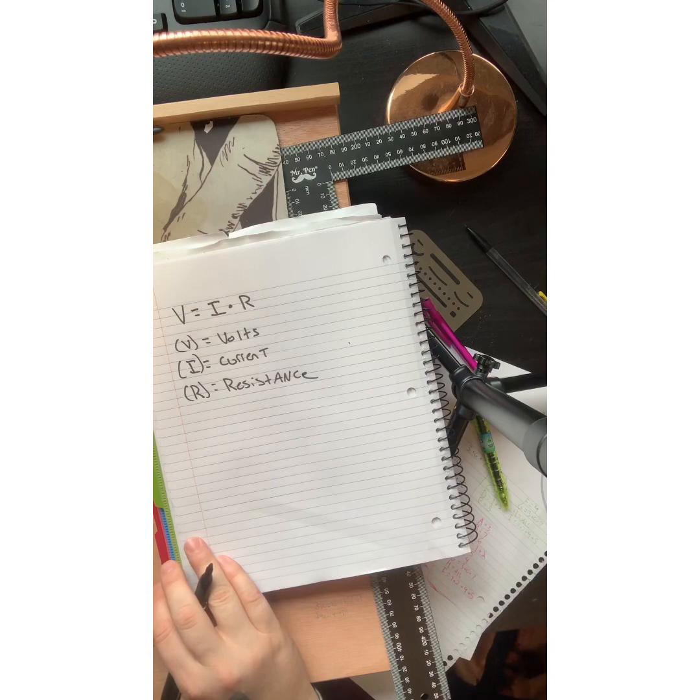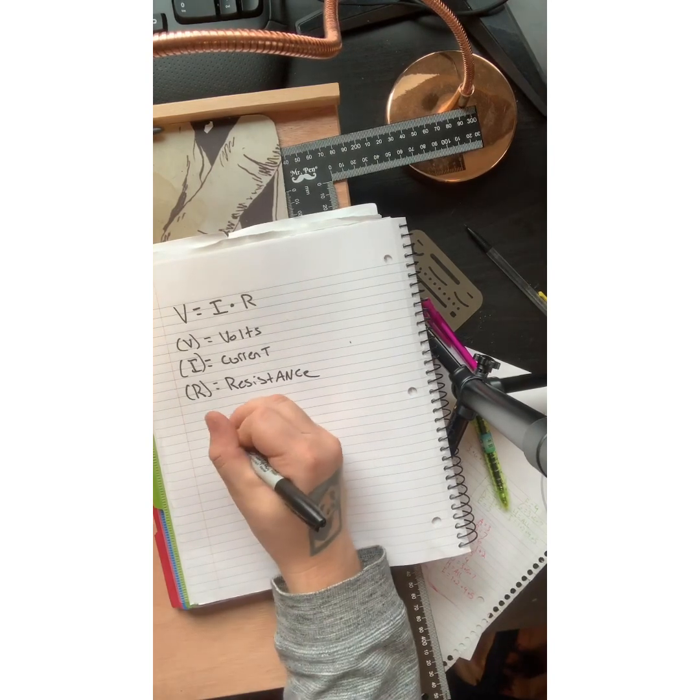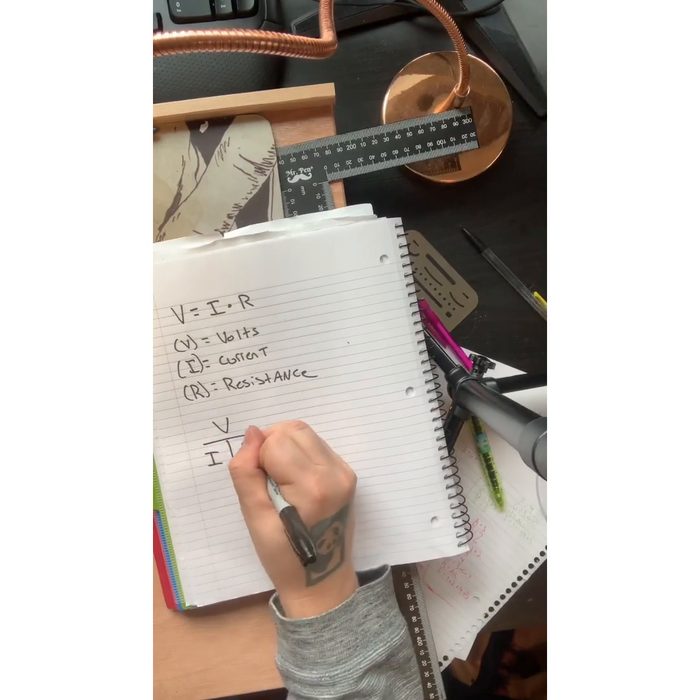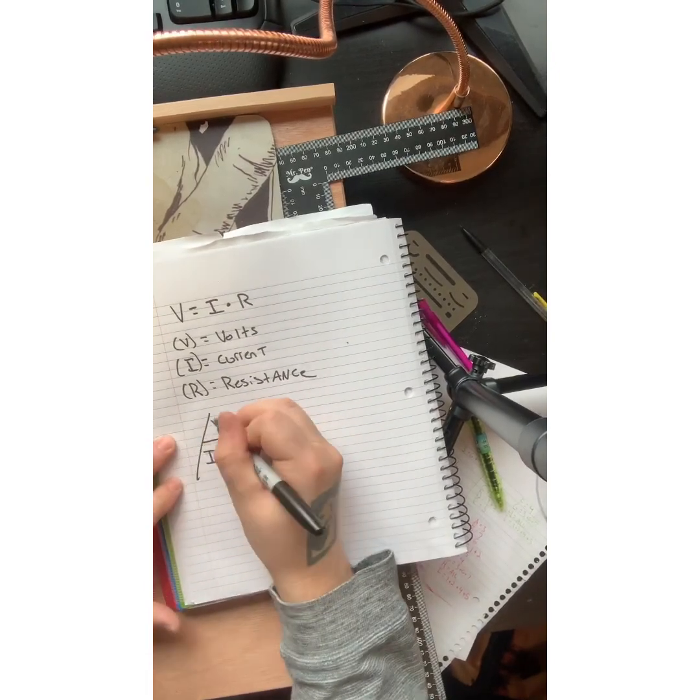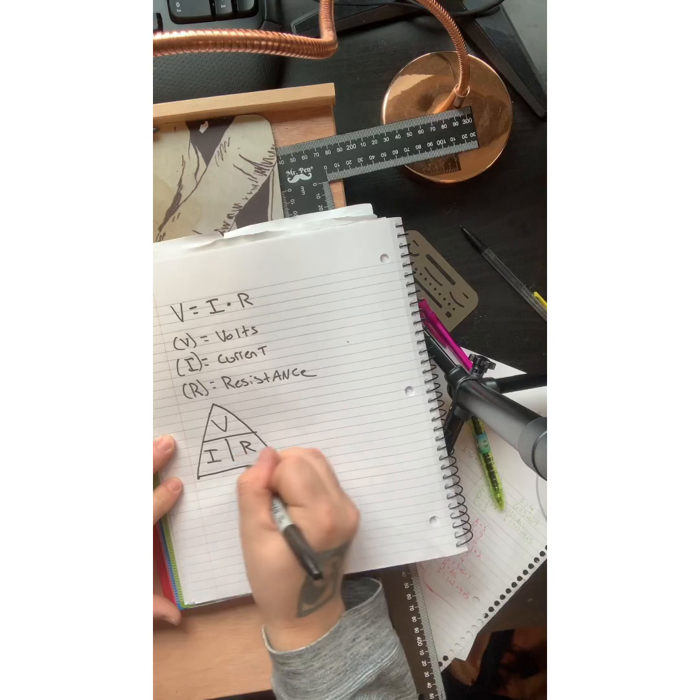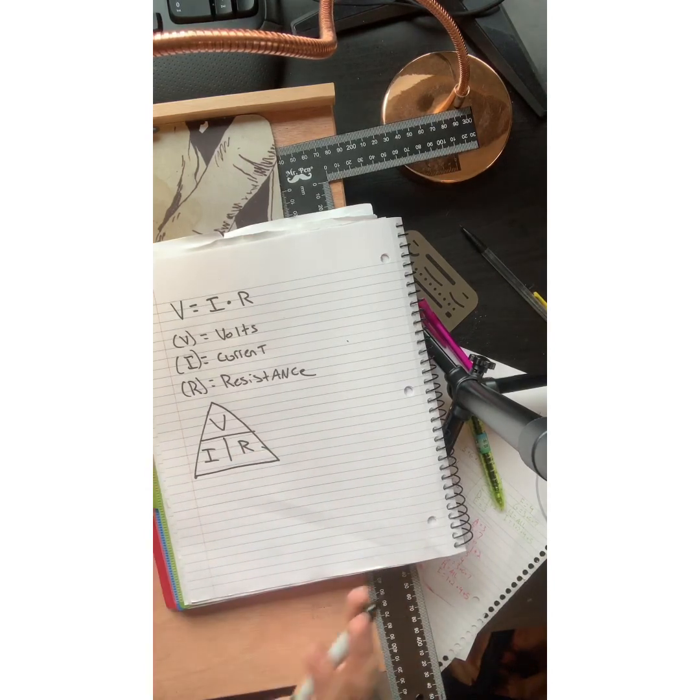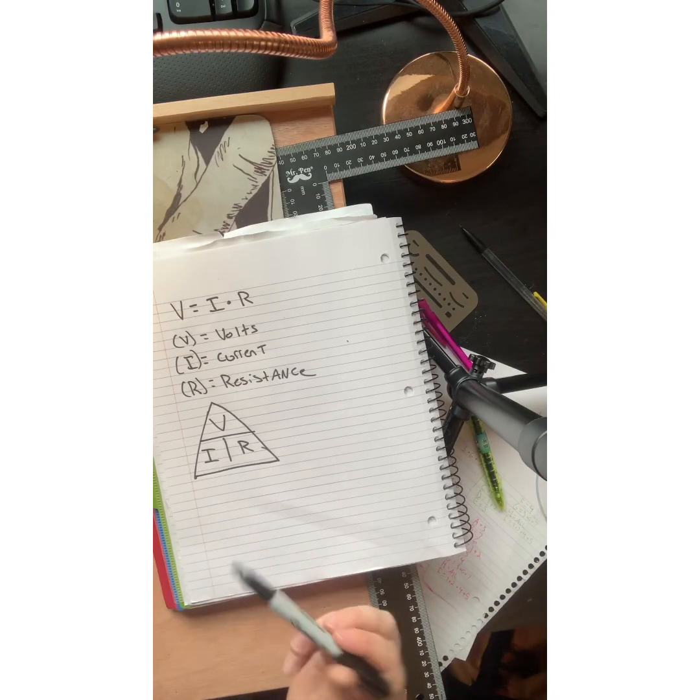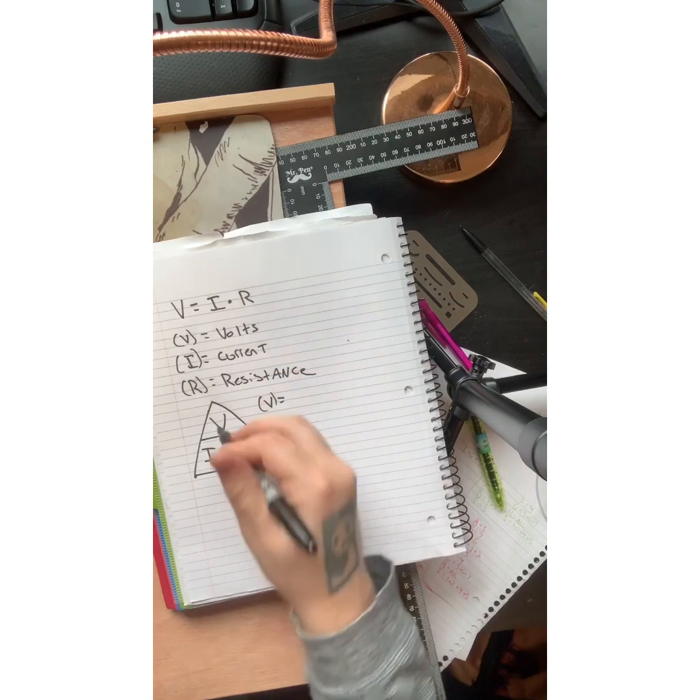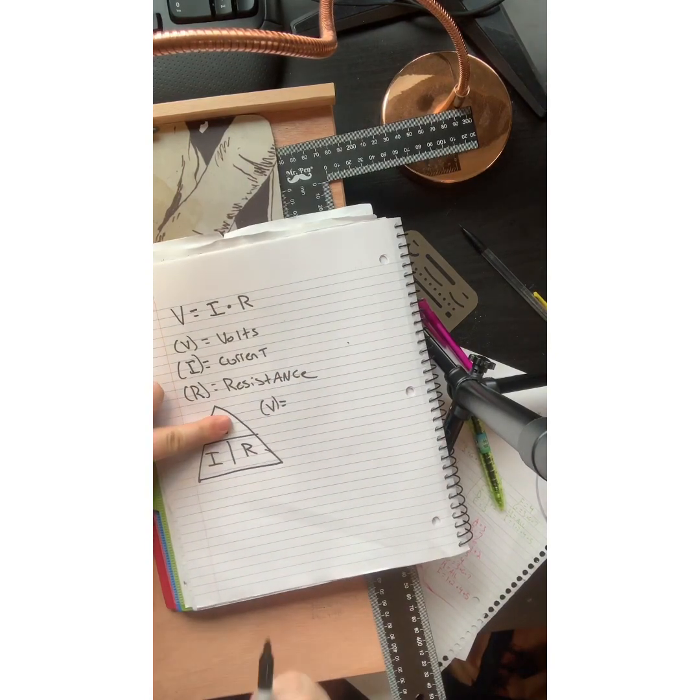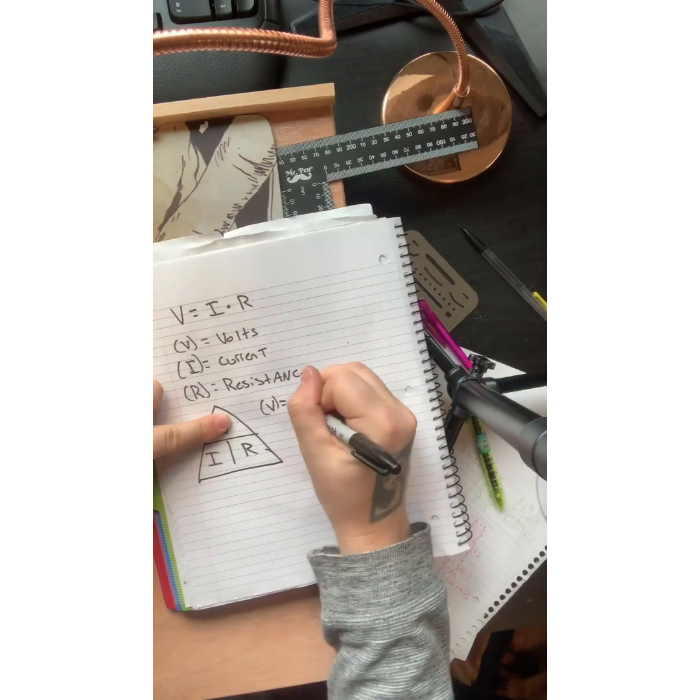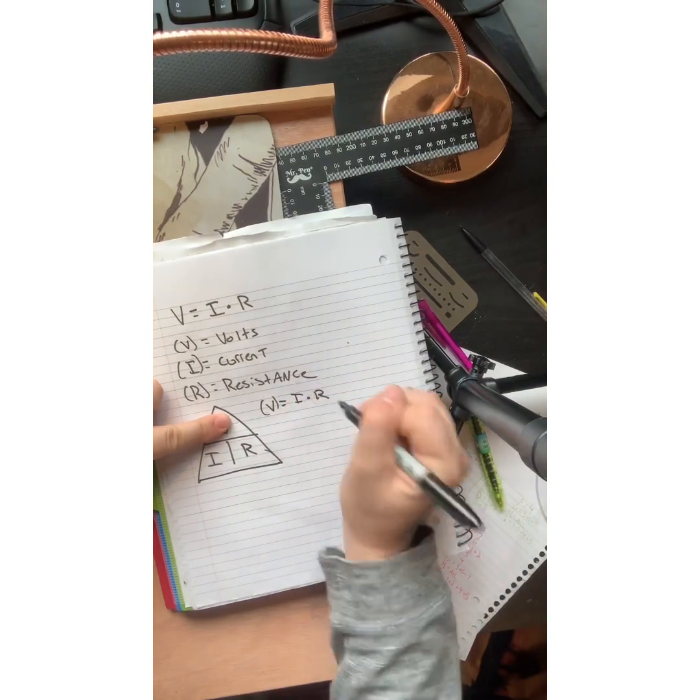Another really easy way to remember this is to do this little guy. I actually like to put a triangle here. I like to call it the power triangle, even though it's Ohm's law, not Watt's law, but we can get into that later. And the easiest way to remember this is if you're looking for your voltage, you can cover the V with your finger. And since these are next to each other, you know that equals I times R.